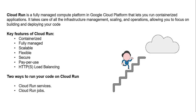The Google Cloud Run service offers flexibility and scalability for managing applications in the cloud. Cloud Run is a fully managed compute platform in Google Cloud Platform where you can run your containerized applications. It takes care of all the infrastructure management, scaling, and operations, allowing you to focus on building and deploying your code. Cloud Run is designed to be serverless — you don't need to worry about managing the infrastructure.